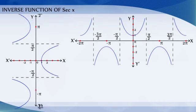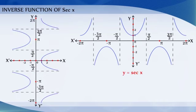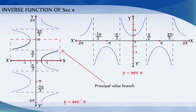These are the graphs of y = Secant X and y = Secant Inverse X. The dark portion of the graph of y = Secant Inverse X represents the principal value branch.